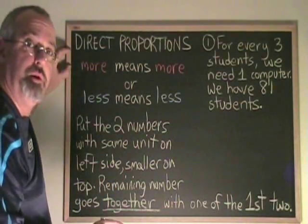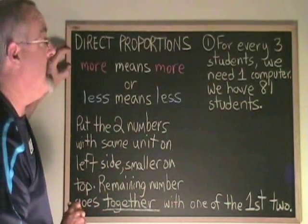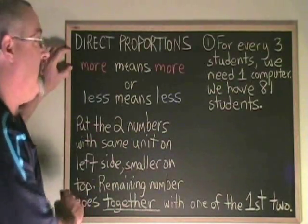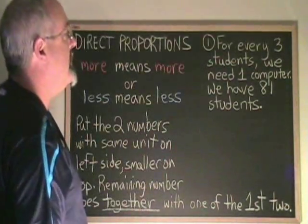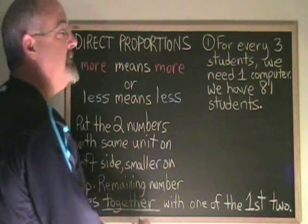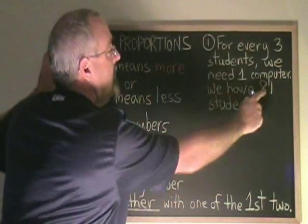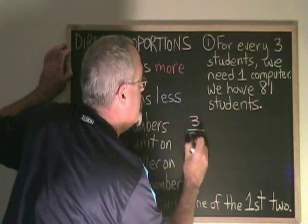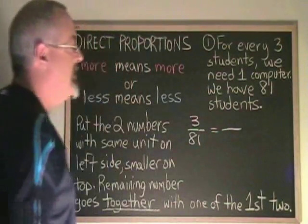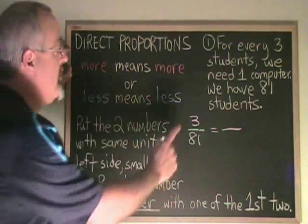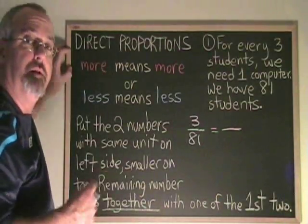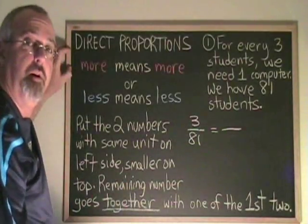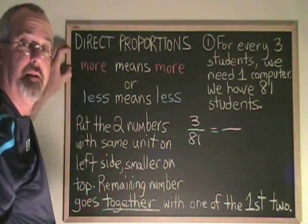For a direct proportion, this is how you build it so that you will be sure to get the right answer. Put the two numbers with the same unit on the left side, smaller number on top. I'm looking at my situation and I see I have two numbers that have students as their unit: three students and 81 students. So I'm putting them together on the left side of my proportion with the smaller number on top. Putting them on the left side is not mandatory — it's just a habit I use to stay organized and make fewer mistakes.